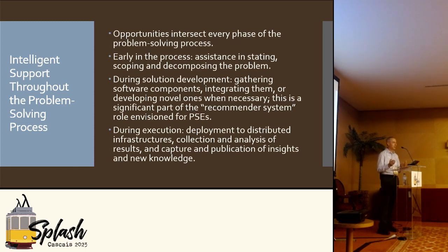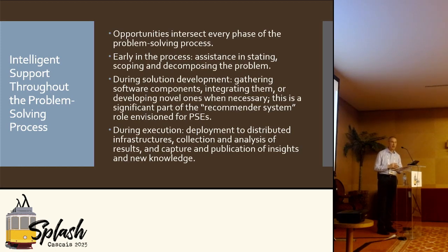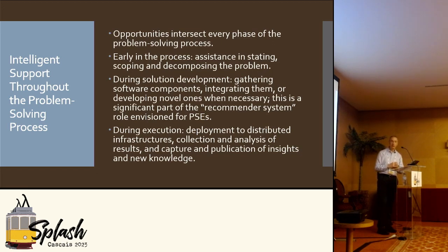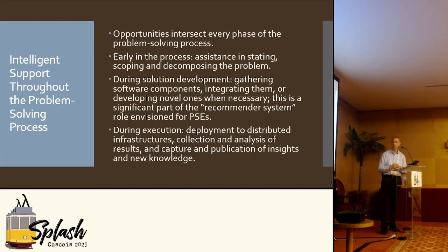There are a number of places throughout the process where intelligent support can be useful. Early in the process, it might help users formulate the problem. During the software development process — at least in the early phase — most of the support was the idea of recommender systems: you've told me what you want to do, I'll go find pieces of software that can help. Then during execution, the ability to deploy to distributed infrastructures and handle all those computational things the scientist doesn't actually care about — they just want their solution to run. And then maybe helping to capture insights and share new knowledge.